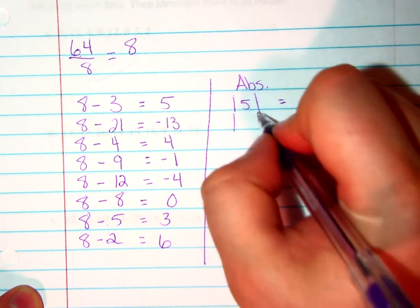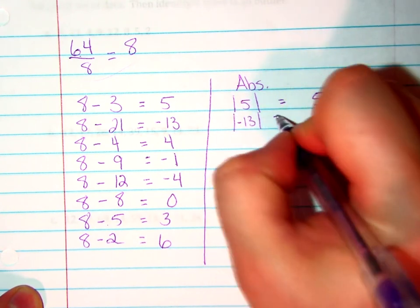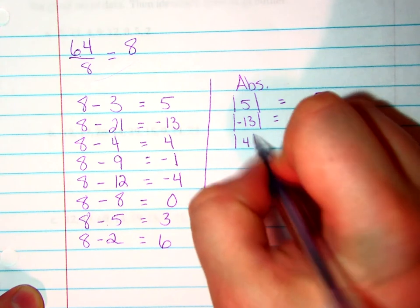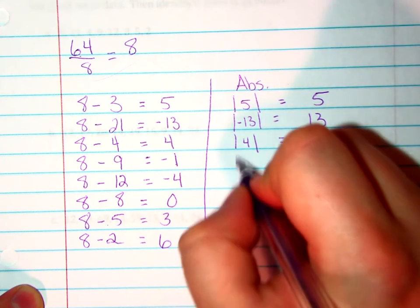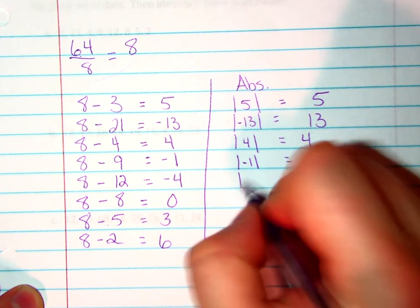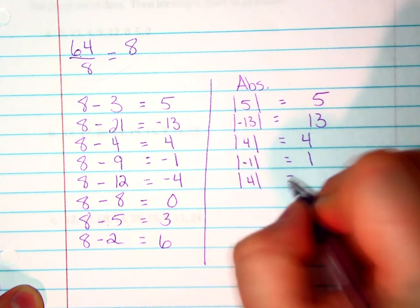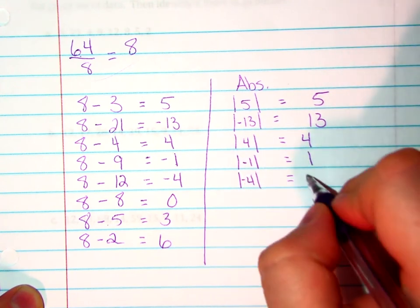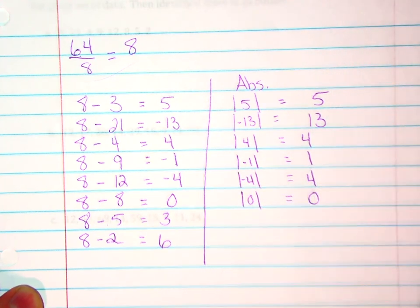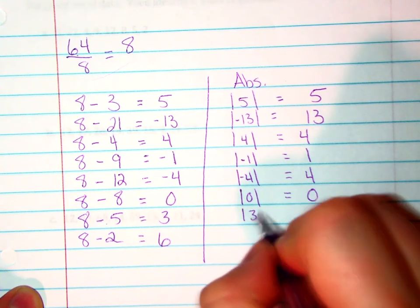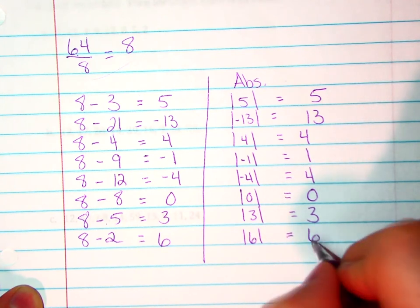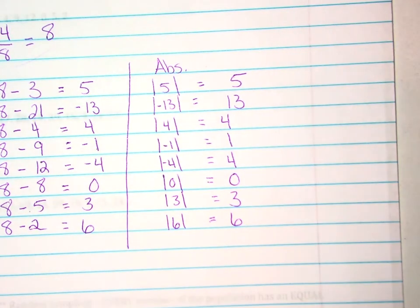The absolute value of 4 equals 4, the absolute value of negative 1 equals 1, the absolute value of negative 4 equals 4, the absolute value of 0 is 0, absolute value of 3 equals 3, and the absolute value of 6 equals 6.